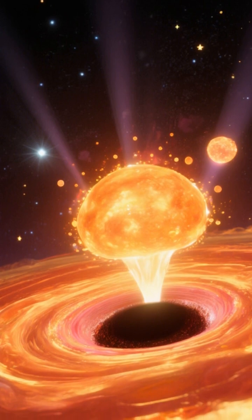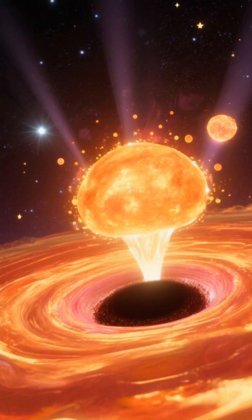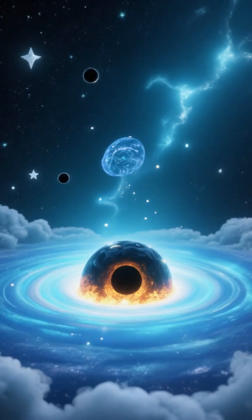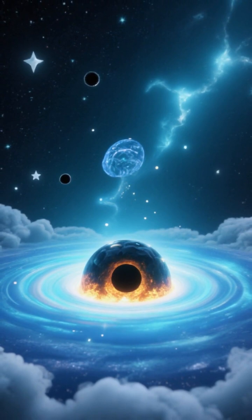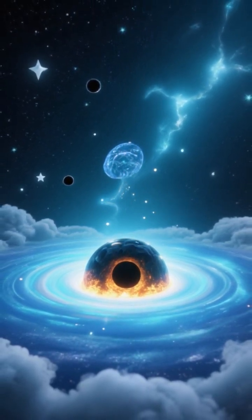How do black holes form? Most stellar black holes are born when massive stars collapse after a supernova. Over cosmic time, they grow by swallowing gas, stars, or merging with other black holes.